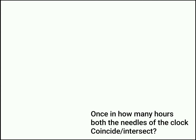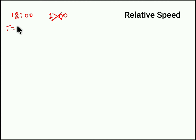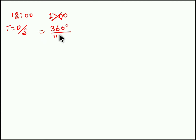I would like to start the session with a simple question: once in how many hours do the needles of the clock coincide — that is, once in how many hours do both the needles of the clock intersect? If we don't know the concept, probably the answer seems like 1 hour, but that is wrong. We know at 12 o'clock both the needles coincide, but they are not coinciding at 1 o'clock. So here we have to use a simple shortcut: relative speed. We know time equals distance divided by speed. The distance is 360 degrees and the speed is 11/2 degrees per minute — this is the relative speed of both the minute needle and the hour needle.